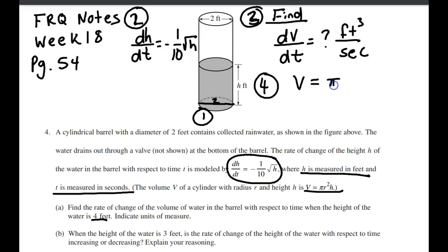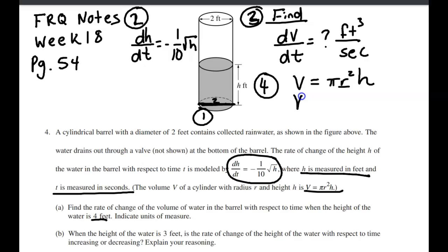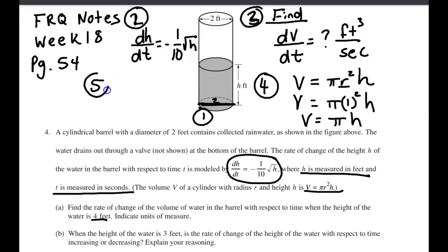There seems to be an extra variable in here, but it's really not a variable. We want V and H — those two variables. The R we don't really care about; it's actually a fixed value. They tell us that the diameter is 2, which means the radius is 1. So V is actually more simply written as πH. Next, for step 5, we take the derivative of that with respect to time, which gives us dV/dt equals π times dH/dt.